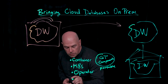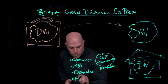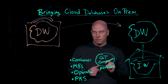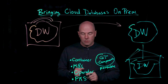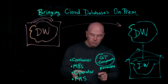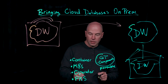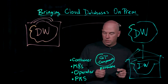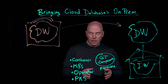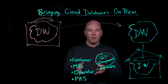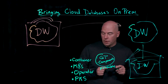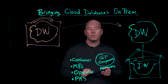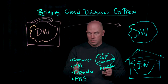The last factor is Pivotal's multi-cloud container service. Pivotal's PKS provides high availability for Kubernetes along with a number of other capabilities, which means you can build your clouds on-prem. So with these four factors, we are bringing cloud databases on-prem.